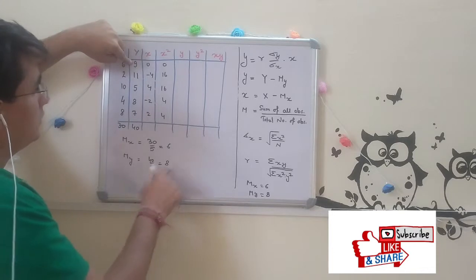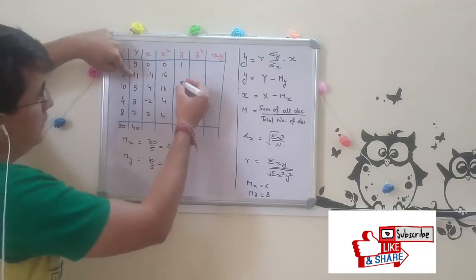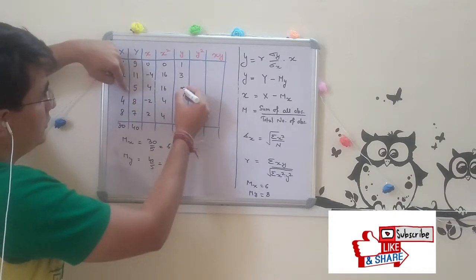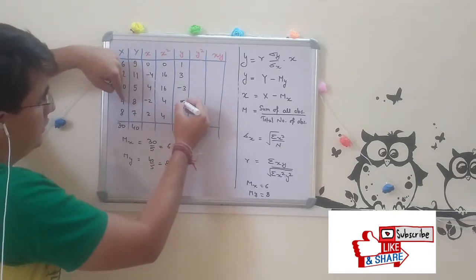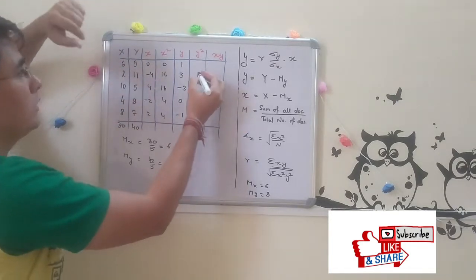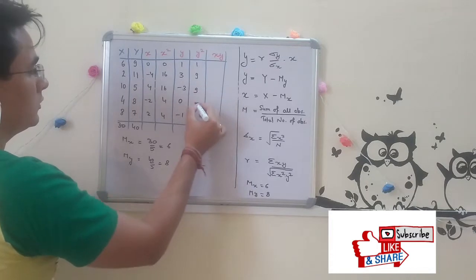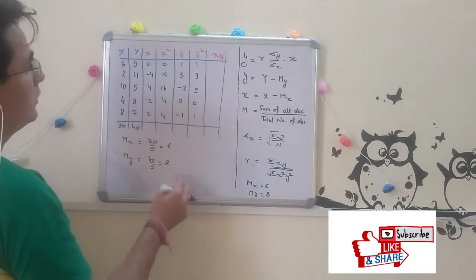9 minus 8 is 1, 11 minus 8 is 3, 5 minus 8 is minus 3, 8 minus 8 is 0, and this is minus 1.